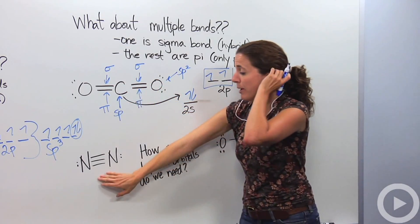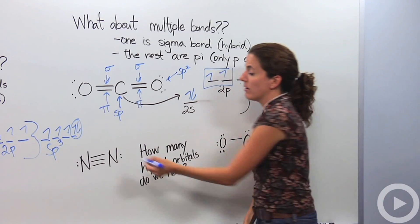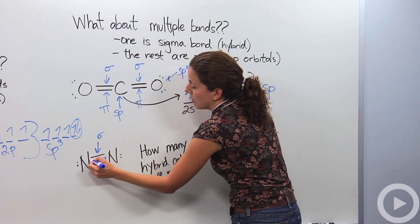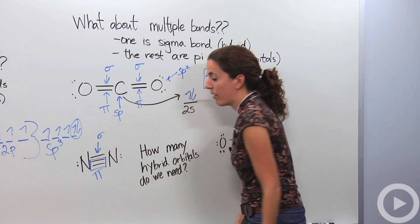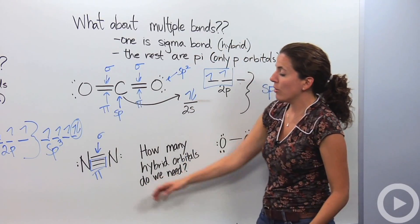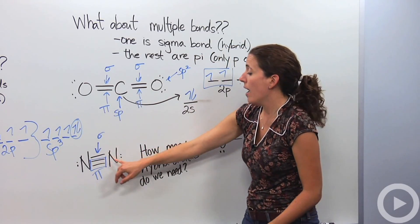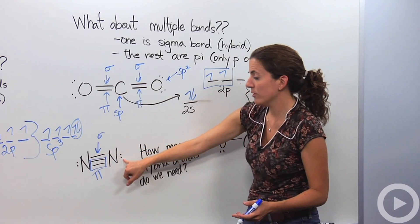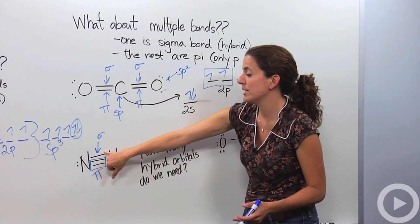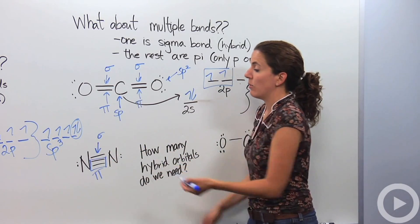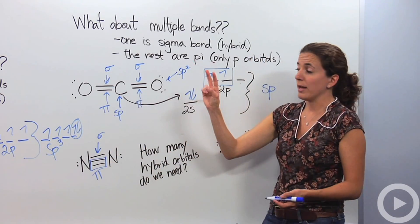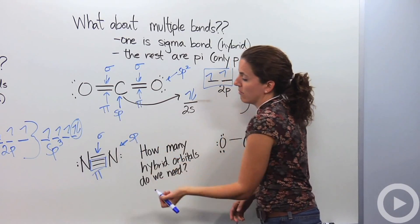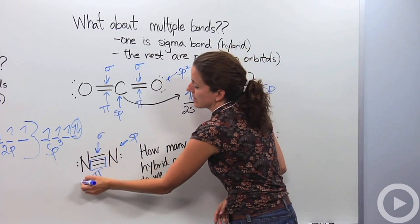Now let's look at a triple bond. In a triple bond, one is sigma and two are pi. The two pi bonds are just p orbitals — we ignore those. For nitrogen, we need one orbital for the lone pair and one for the sigma bond — two hybridized orbitals total: one from s and one from p. So we call this sp hybridization.